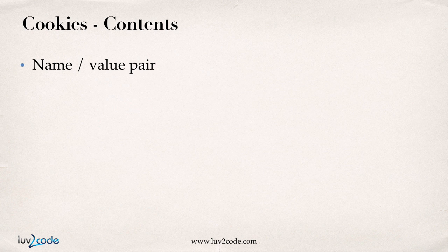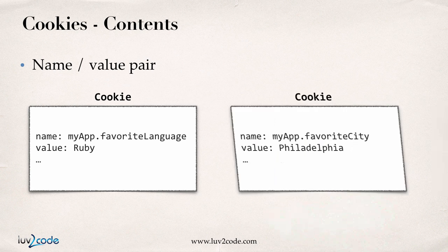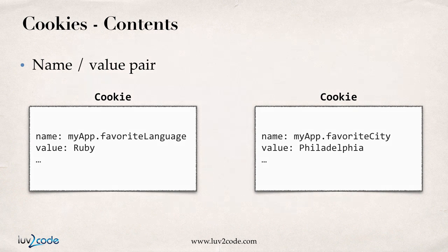What exactly is in a cookie? You can think of a cookie as a name-value pair. For example, a cookie might have the name "myapp.favoriteLanguage" and the value could be "Ruby". An application can actually make use of multiple cookies — so we could have another cookie called "myapp.favoriteCity" with the value "Philadelphia, Pennsylvania". Your application can create many cookies; the max is about 20 cookies per site per path, which is more than enough for most applications.